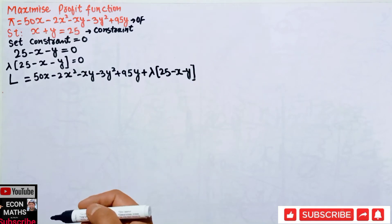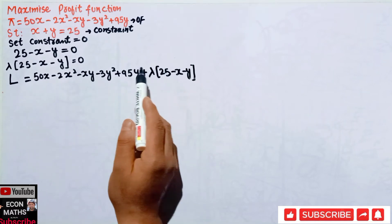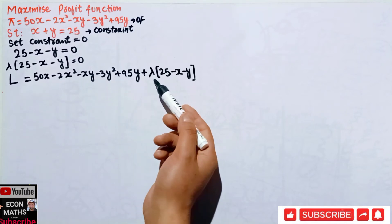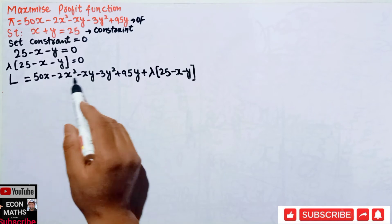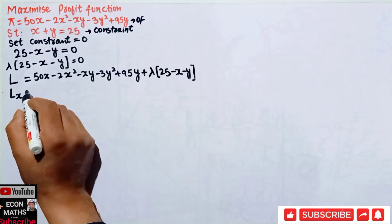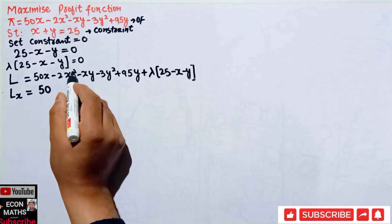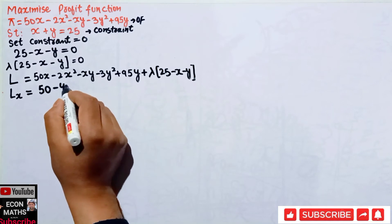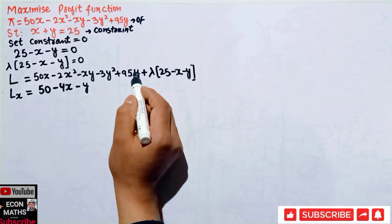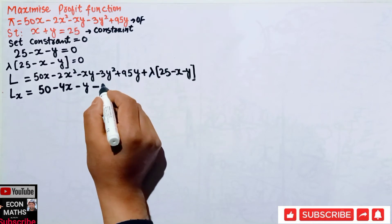To find the optimal values of x, y, and lambda, we partially differentiate the Lagrange's function with respect to each variable and set equal to 0. Differentiating with respect to x: the derivative of 50x is 50; 2x² gives 4x; xy gives y; terms without x vanish; and the lambda term gives -λ. So equation 1 is: 50 - 4x - y - λ = 0.